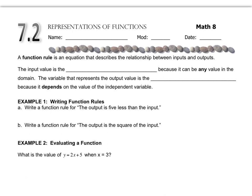A function rule is an equation that describes the relationship between inputs and outputs. The independent value is the input, and the dependent variable is the output. You've used these words in science class and in an earlier lesson. That's just some vocab out of the way.